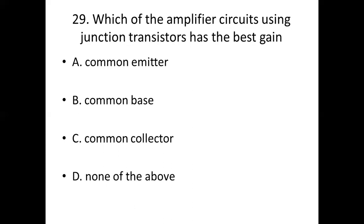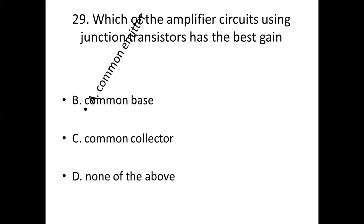Question 29: Which amplifier circuit using junction transistors has the best gain? Option A: common emitter. Option B: common base. Option C: common collector. Option D: none of the above. Answer: Option A — common emitter.